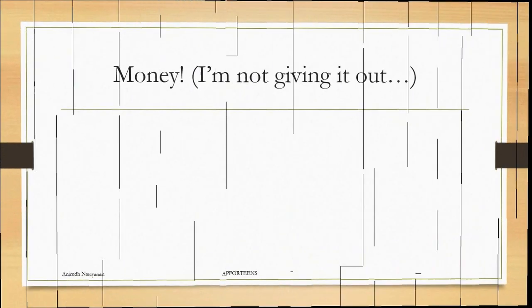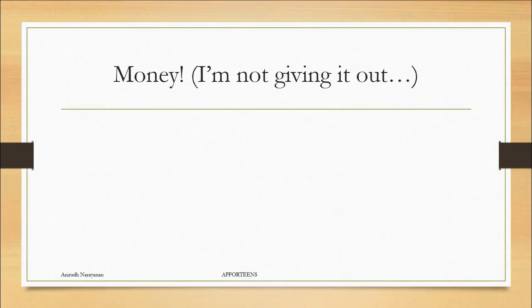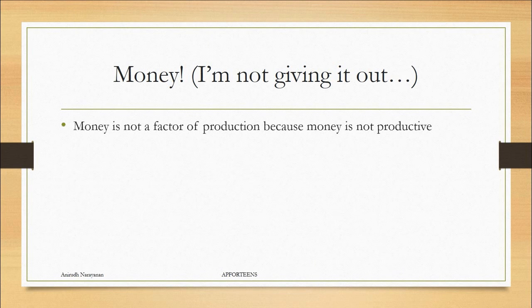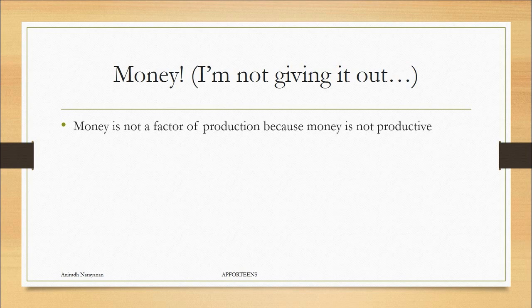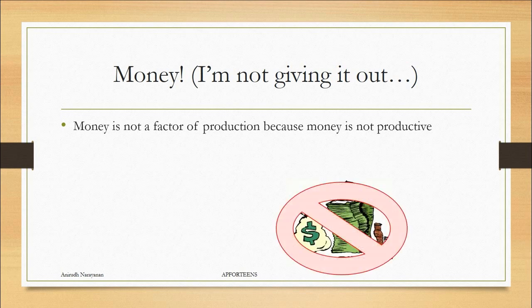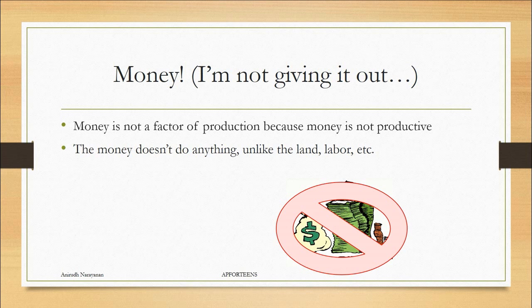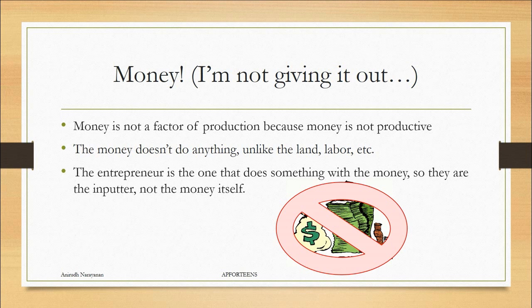Now money. We've mentioned before that money is not capital. Money is not a factor of production because money is not productive. I'm not giving it out by the way just to make sure that you understand that money isn't productive at all. The money doesn't do anything. The land does something. Labor does something. But money doesn't do anything.